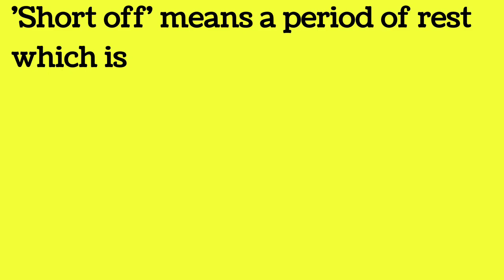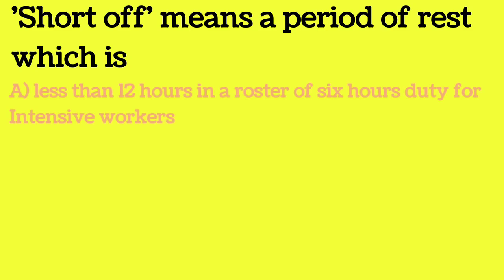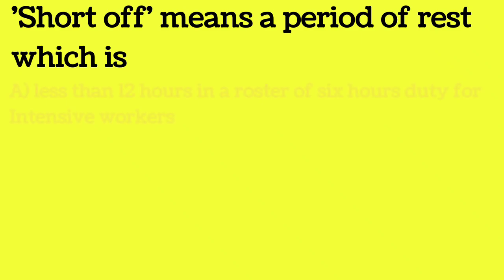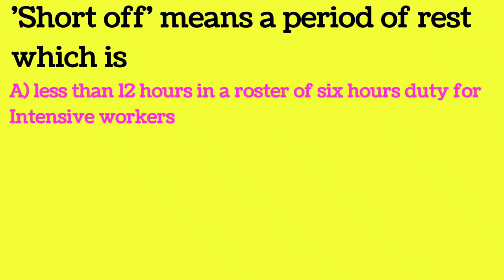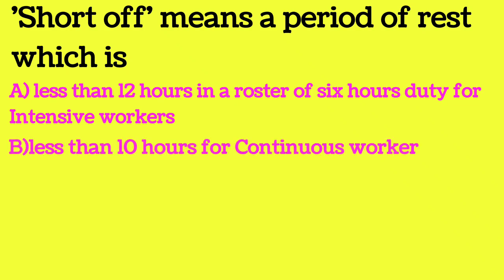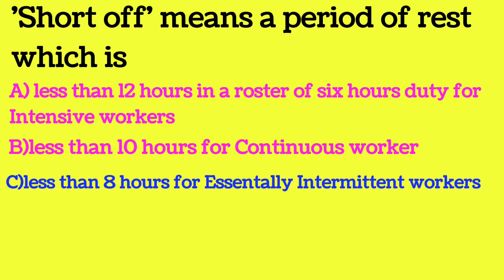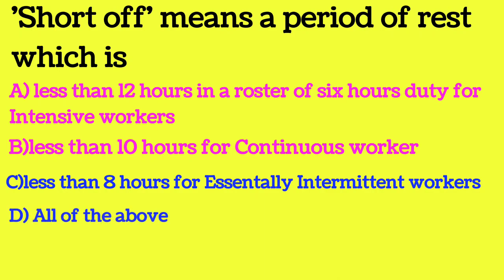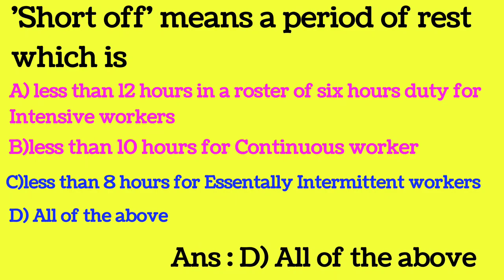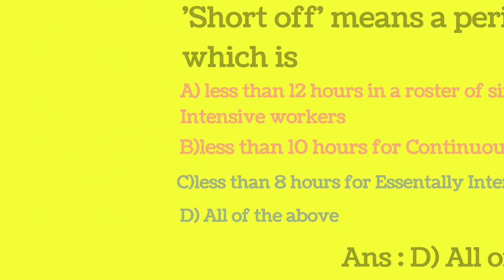'Short of' means a period of rest which is: Option A — less than 12 hours in a roster of 6 hours duty for intensive workers; Option B — less than 10 hours for continuous workers; Option C — less than 8 hours for essentially intermittent workers; Option D — all of the above. The answer is all of the above.